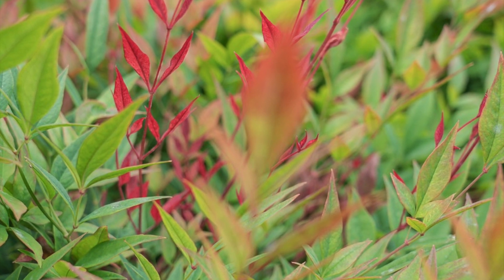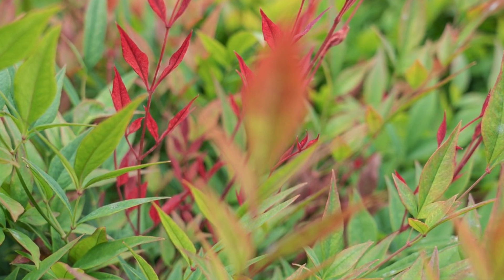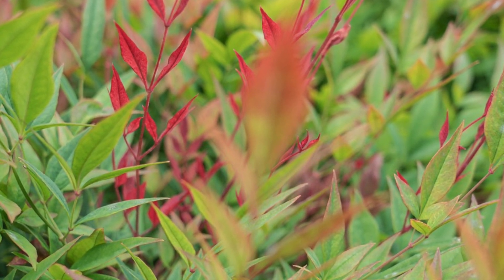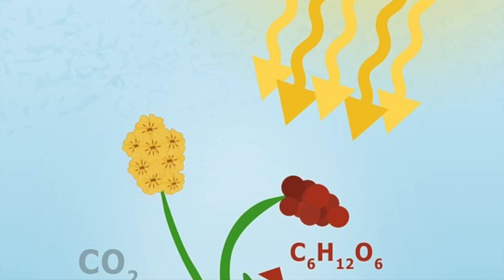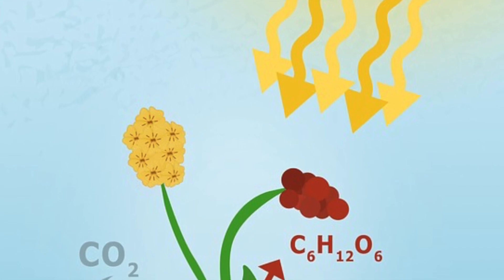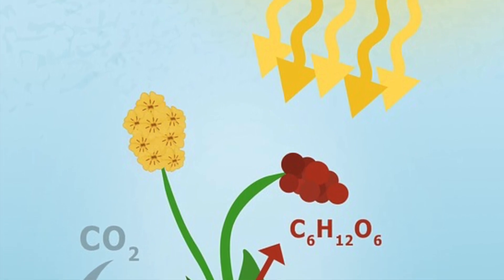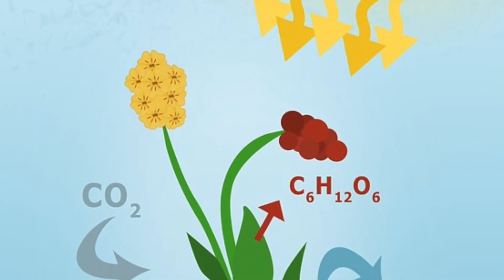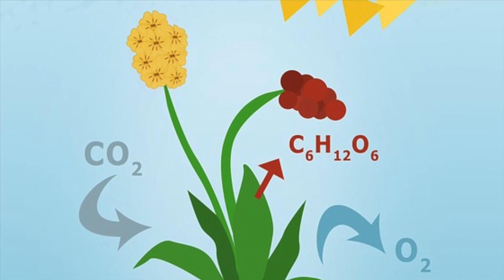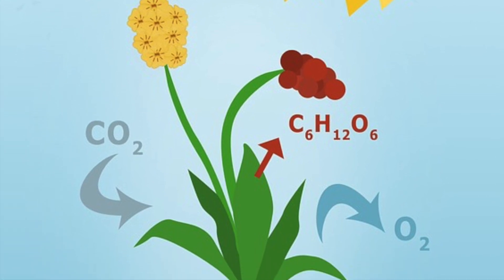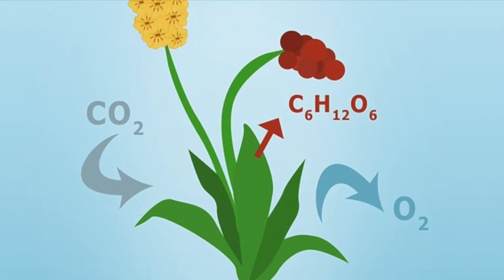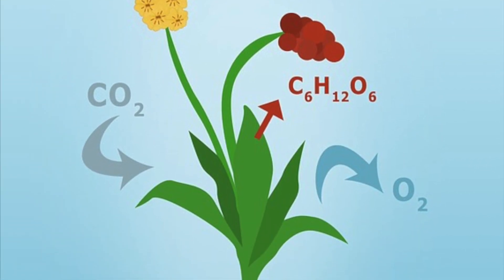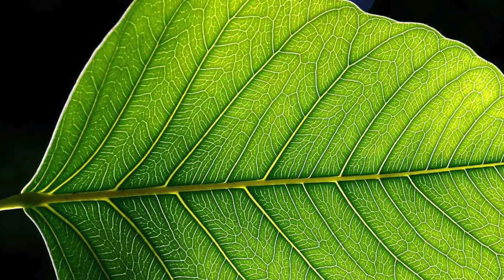First of all we'll look at photosynthetic cells. One of the ways that plants differ from animal cells is the fact that plants can make their own food by photosynthesis. This means that many plant cells can carry out photosynthesis, and photosynthetic cells usually have a number of adaptations.